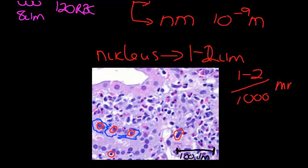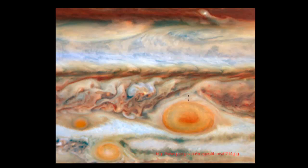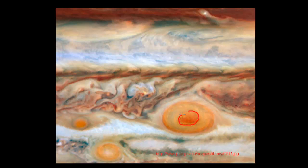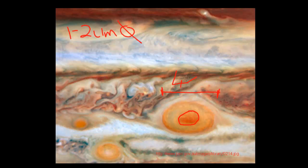You might think this is a waste of time and that you can just look and know it's cells. Well, let me show you examples where, if you don't see a scale bar, you can get into deep trouble. Here's a fantastic photograph that many of you interested in science may have seen before. There's no scale bar, so you can't tell the scale. Looking at it, we'd probably say that dark spot is a nucleus — about one to two micrometres in diameter. But guess what? This is a photograph of the surface of Jupiter taken from a satellite, and this distance here is four times the diameter of the Earth.